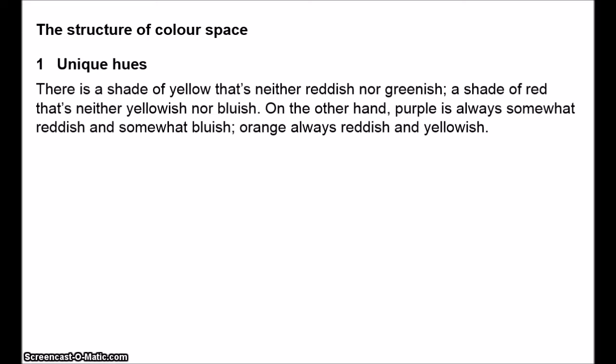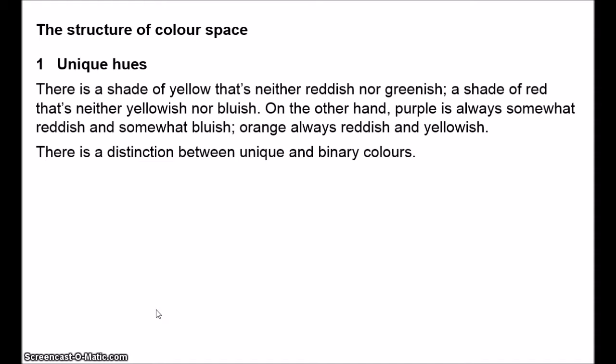One of the biggest objections to reductive physicalism appeals to the structure of colour space. As we saw in the last video, some colours are unique hues — red, green, yellow and blue. There is a shade of yellow that is neither reddish nor greenish, a shade of red that is neither yellowish nor bluish. On the other hand, purple is always reddish and bluish to different extents; orange is always reddish and yellowish. So red, yellow, blue and green are the unique hues, and other colours are binary hues. Binary colours are composed as mixtures of the unique colours. This phenomenology arises due to the opponent process structure of colour vision — we have a red versus green channel and a yellow versus blue channel, and perceived hue is based on the relative responses of these channels.